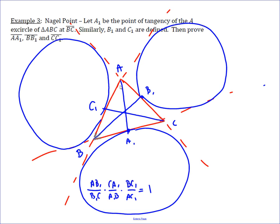To show this, we use a theorem that says the distance from a vertex to a point of tangency on the opposite side — so that point here, which we can call K — gives CK equals the semiperimeter. This can be proven by looking at equal tangents; for now we take it as fact. So if CK equals the semiperimeter, and by equal tangents BK and BC1 are the same, then CB plus BC1 equals the semiperimeter, because CB plus BK makes up CK.